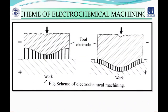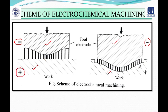This is a basic schematic diagram for electrochemical machining. You can see the tool electrode is connected to the negative terminal and the workpiece is connected to the positive terminal. In this figure, a suitably shaped tool has been used, and the gap between the tool and the workpiece is filled with a suitable electrolyte.